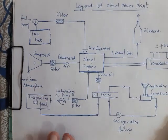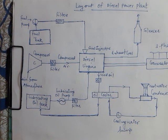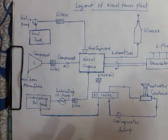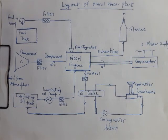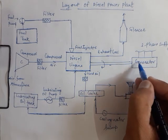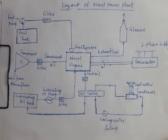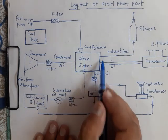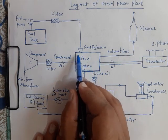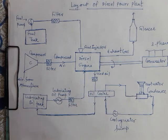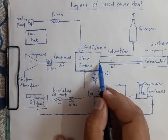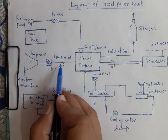Now we will understand the layout of a diesel power plant. In any power plant, we first generate mechanical energy — rotating the shaft of an engine or turbine — and then convert it into electrical energy via a generator. In a diesel power plant, the chemical energy of diesel fuel is converted into mechanical energy, and then into electricity. The first circuit is the compressed air circuit: air is taken from the atmosphere and compressed by a compressor.